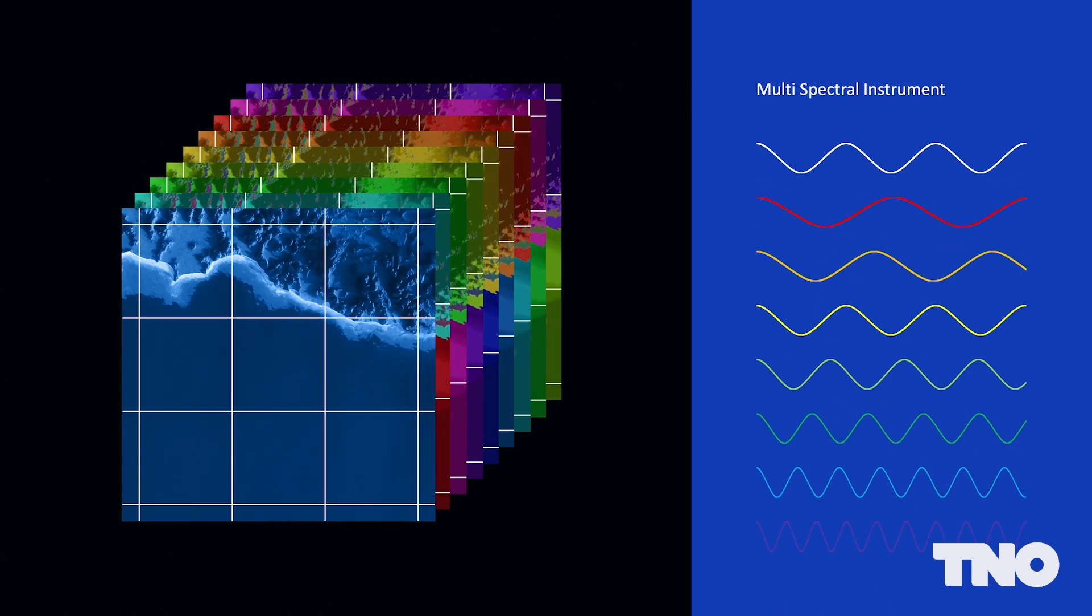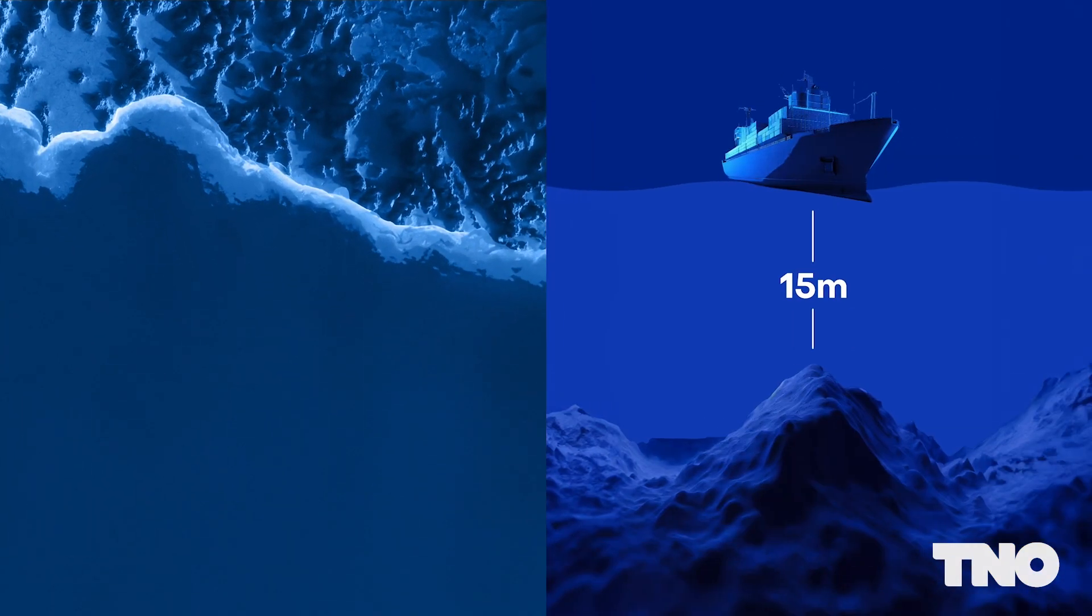The resulting data is an image of the Earth where each pixel covers a small square on the Earth and each pixel consists of multiple brightness values, namely one value per wavelength range. But how do these images relate to the depth of the sea?